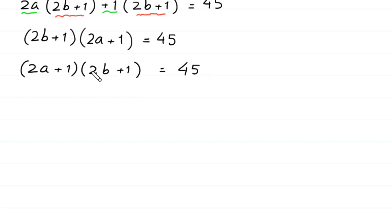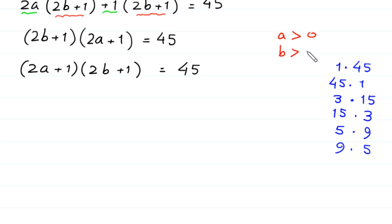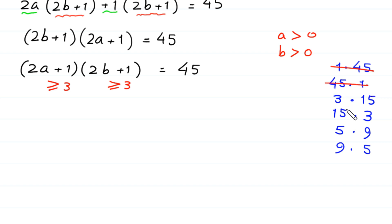Now we have two factors on the left side. 45 can be factorized as 1×45, 45×1, 3×15, 15×3, 5×9, and 9×5. Since a and b are positive integers, (2a+1) must be ≥ 3 and (2b+1) must be ≥ 3. So the cases 1×45 and 45×1 are rejected since one factor equals 1, which is less than 3. We have 4 cases left.